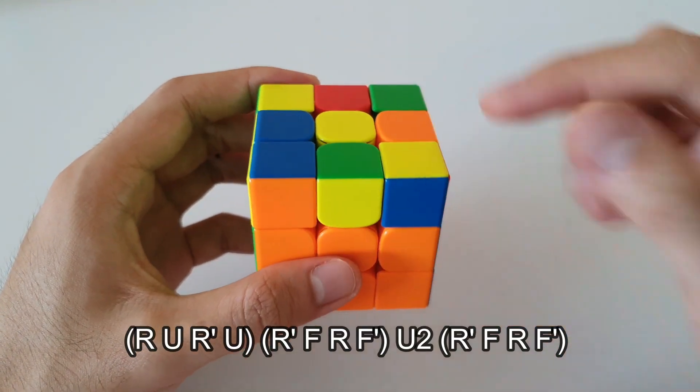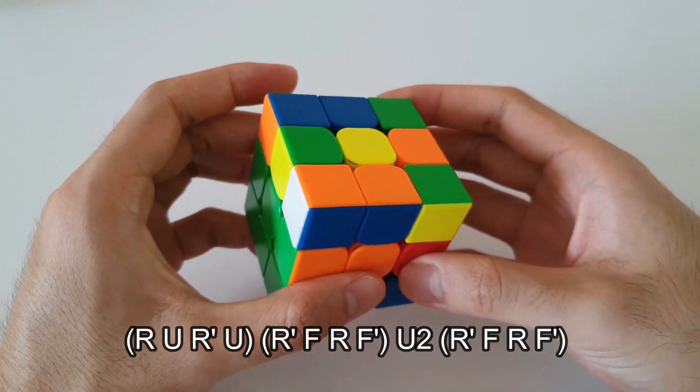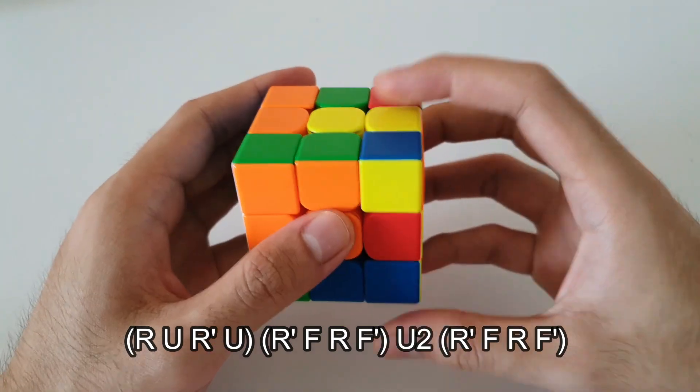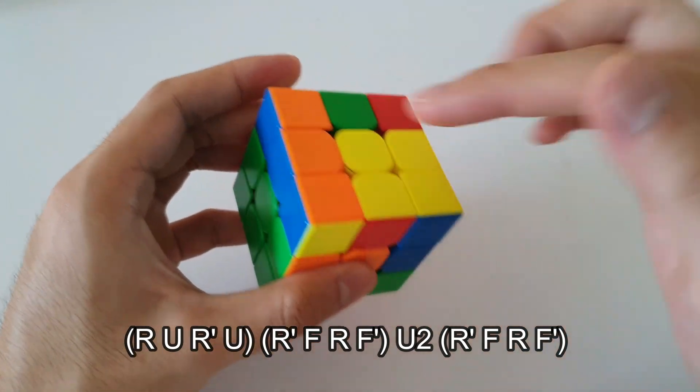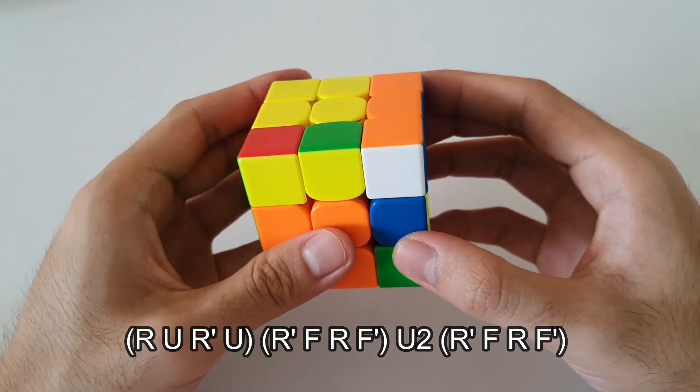For this algorithm, it starts off with taking the F2L pair out like this, moving it to the back, doing a sledgehammer on this slot. Now we want to move the F2L pair back around and insert it with another sledgehammer.